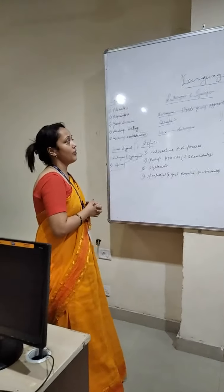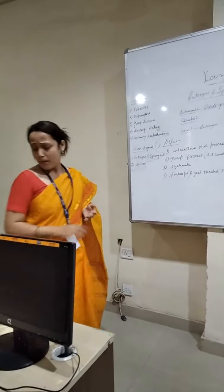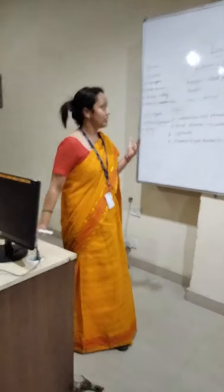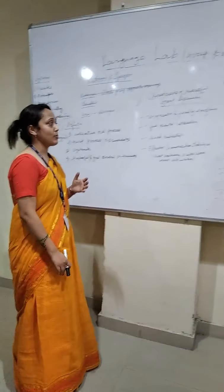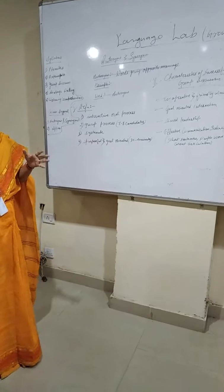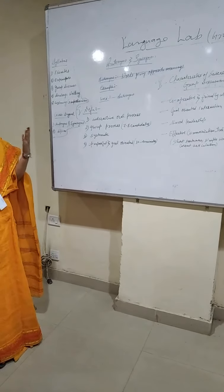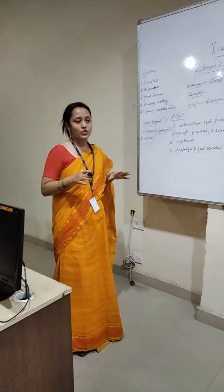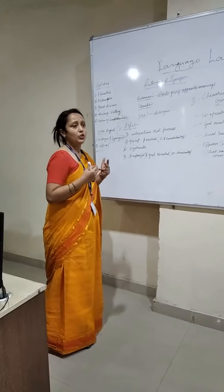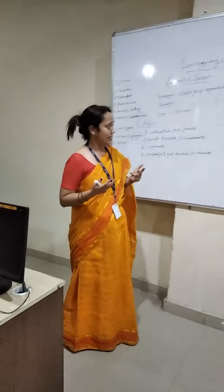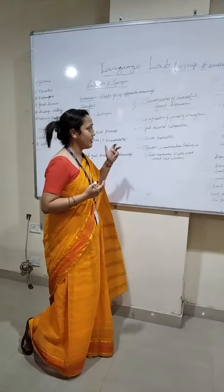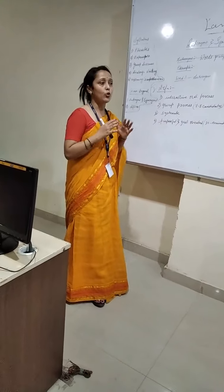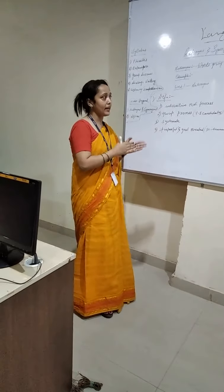Now I would like to talk about the characteristics of successful group discussion — what are the things which make a group discussion successful. The very first is a cooperative and friendly atmosphere, which means that the candidates participating should be cooperating with each other and there should be a friendly atmosphere. You shouldn't be dominating your fellow candidates. The second is goal oriented interaction, meaning if you are speaking or presenting your expression, it should be goal oriented and the objective should be relevant to the topic.